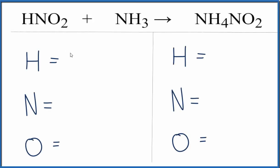So we have one hydrogen here, plus we have these three hydrogens here. So we actually have four total hydrogens on the reactant side. Nitrogens we have one, and oxygens we have two.